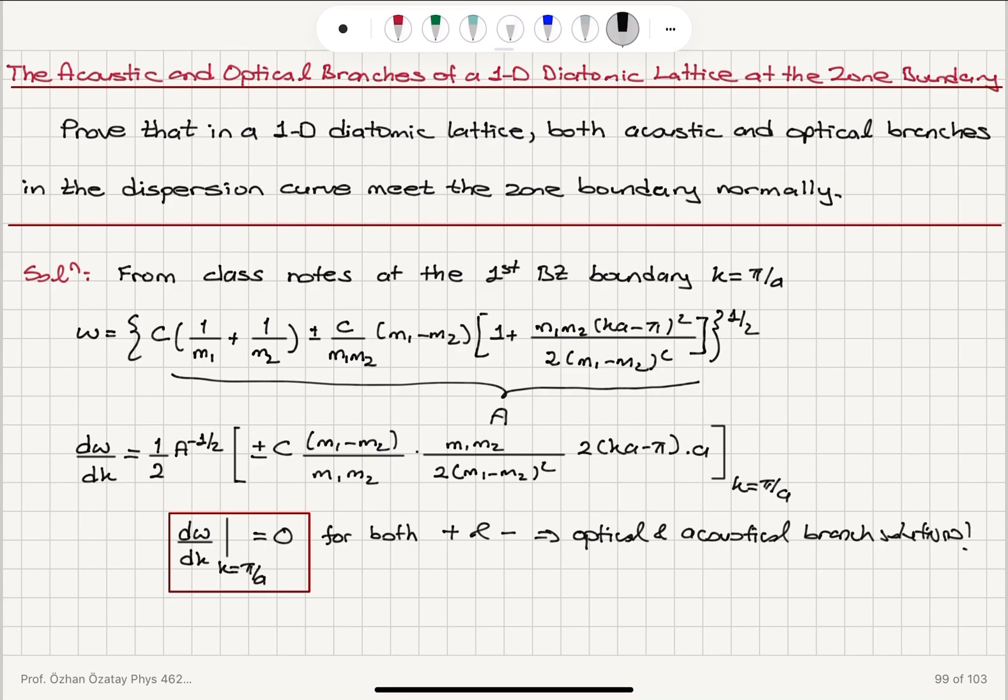We were asked to show that at the first Brillouin zone boundary, the dispersion curve meets the zone boundary normally, which means the derivative with respect to k is 0. That's because we have a standing wave forming at that point.